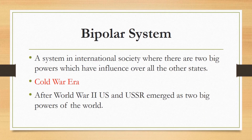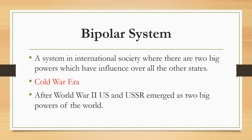The second type is the bipolar system. As 'bi' means two, it refers to a system in international society where there are two big powers which have influence over all other states. The world witnessed such a system during the Cold War era, which began just after the end of World War II in 1945. After World War II, the United States and USSR emerged as two big powers. They both struggled against each other to maintain their hegemony — the US promoting capitalism and the USSR backing communism — and made alliances to suppress each other.